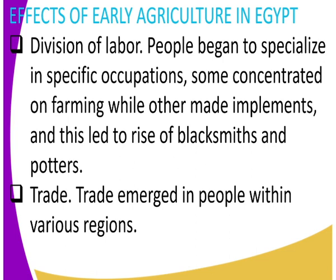The first effect is division of labor. People began to specialize in specific occupations — for example, some concentrated on farming while others made implements, and this led to the rise of blacksmiths and potters. People also specialized in art and craft activities. So we had farmers and also those people who made implements.